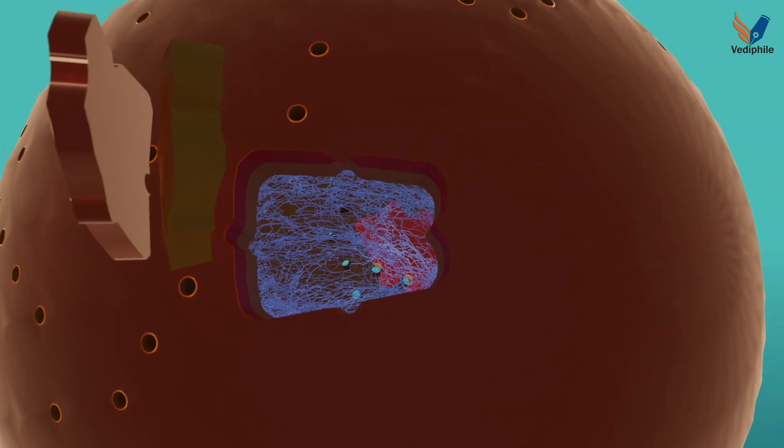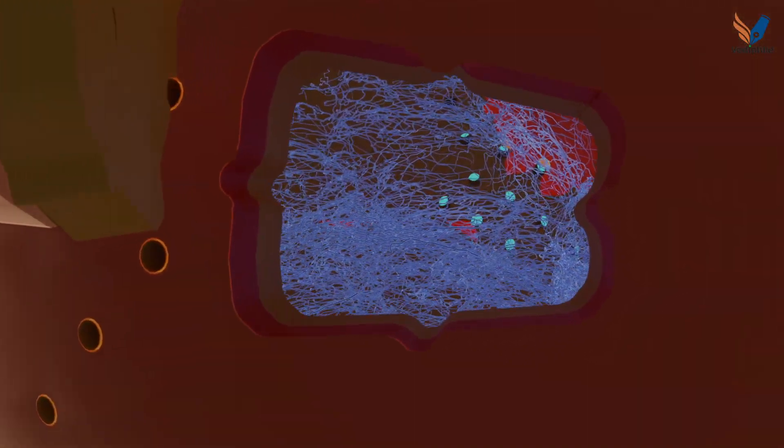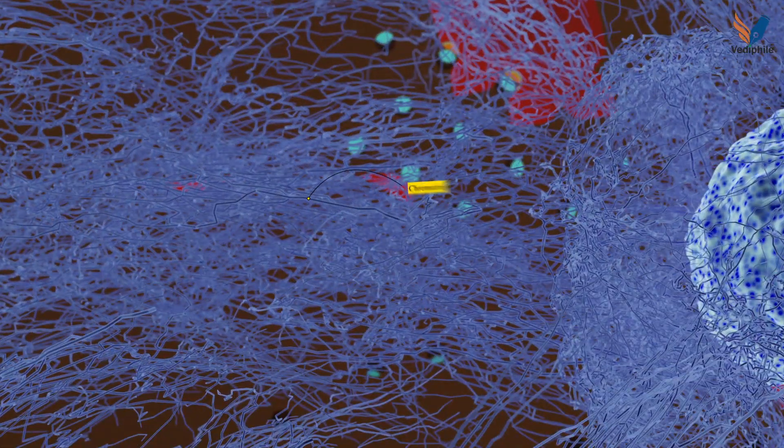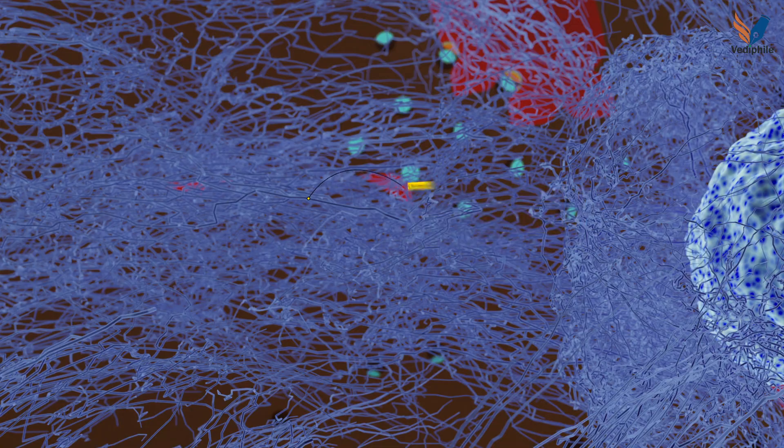This double membrane structure is known as the nuclear membrane, or we can say it is an envelope which encases the nucleus. These thread-like structures are known as chromatins, which are found within the nucleus containing proteins and DNA.